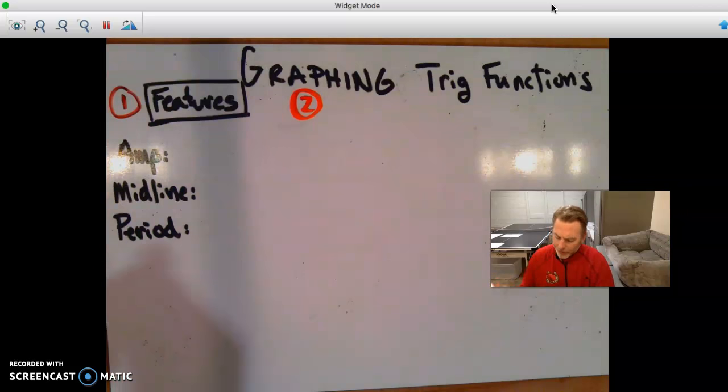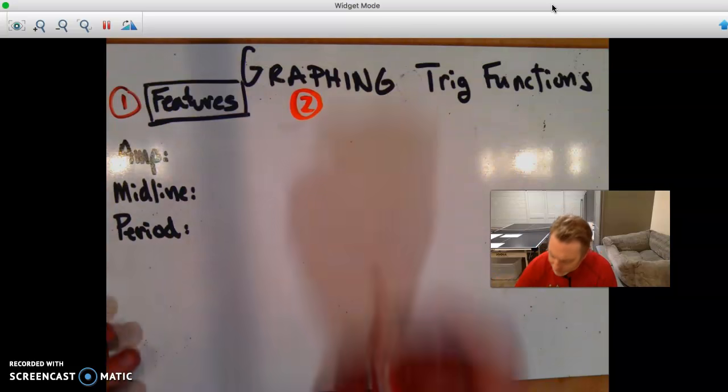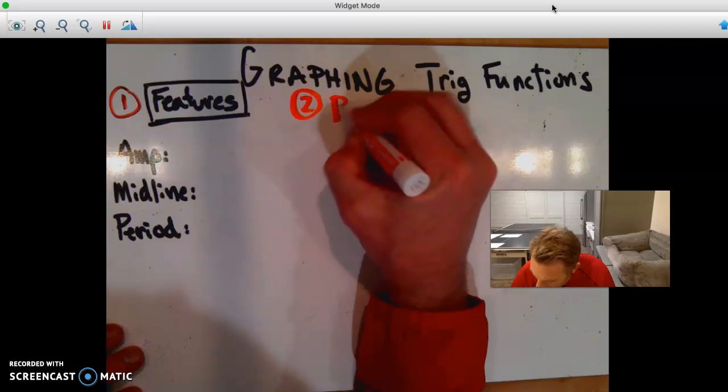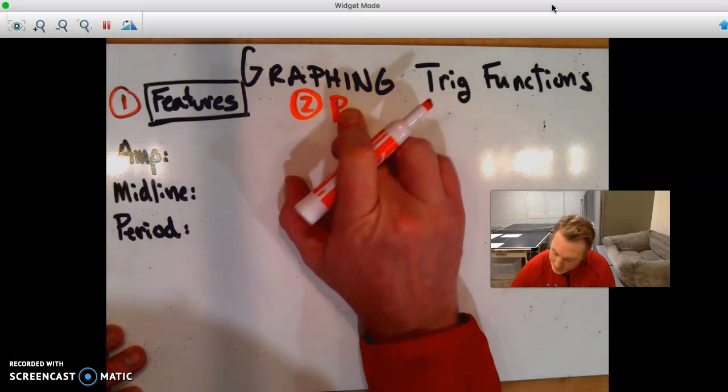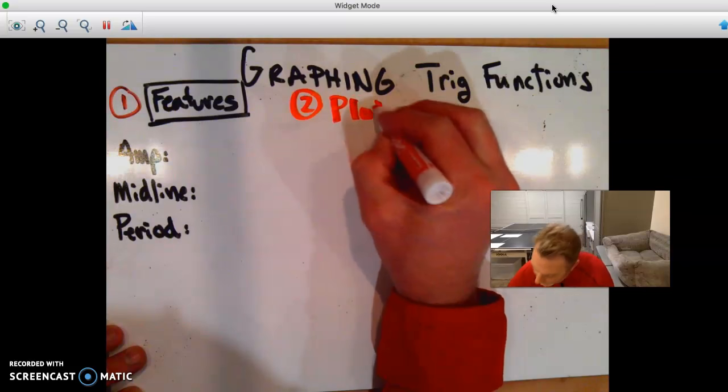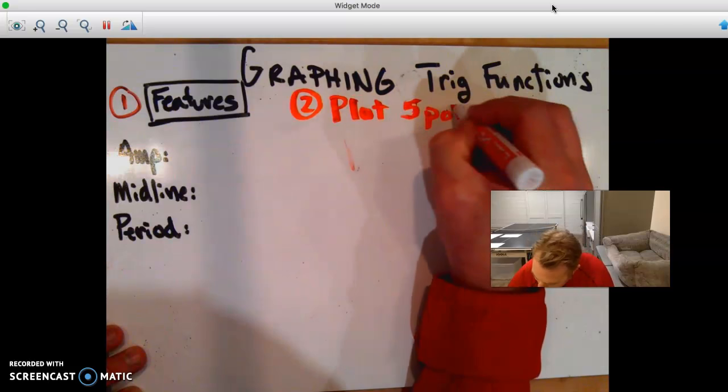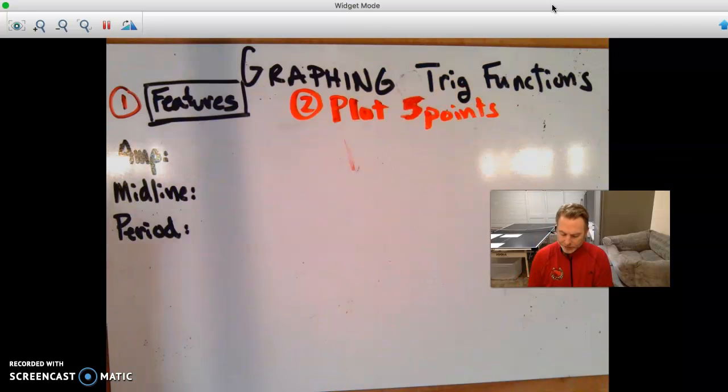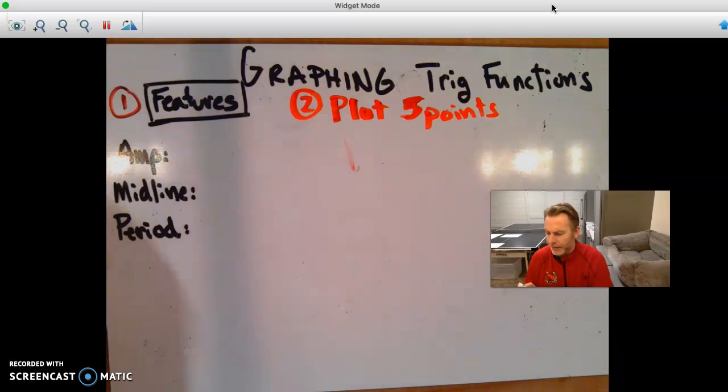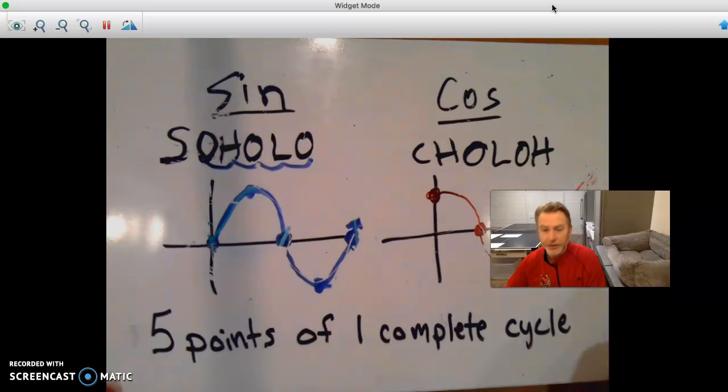And the period is going to be important because the period says the length of time on the x-axis that each graph takes to complete one cycle. So we're going to want to write down the graph's features. After we do that, what we're going to then do, our second step, is we're going to plot five points. Now, we look at five points because five points gives us one complete cycle.